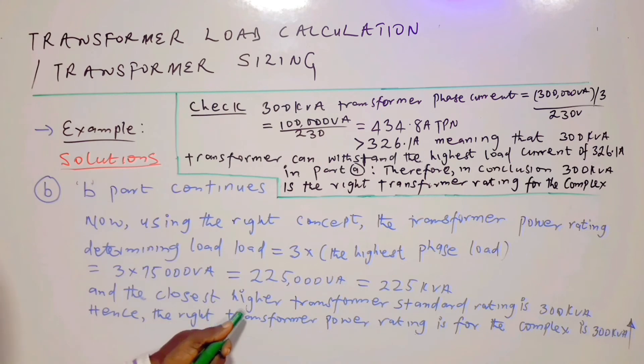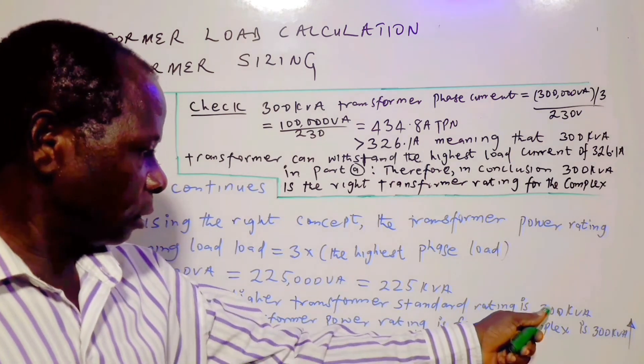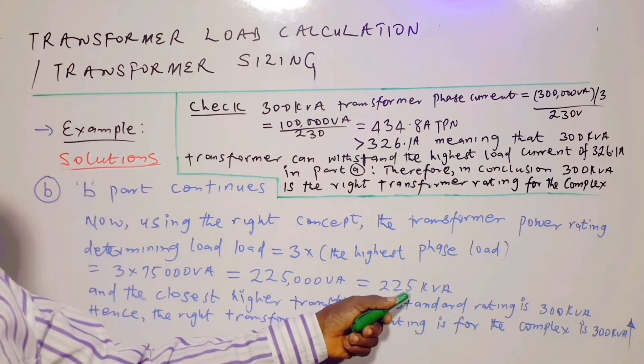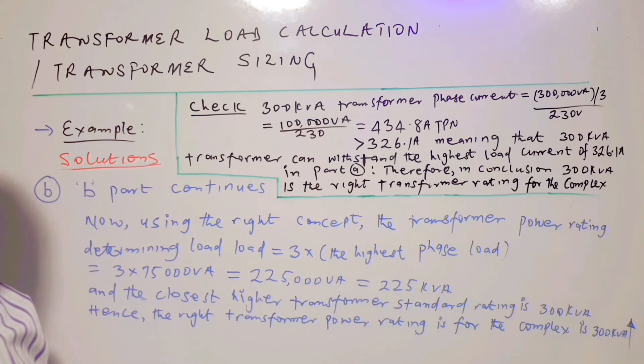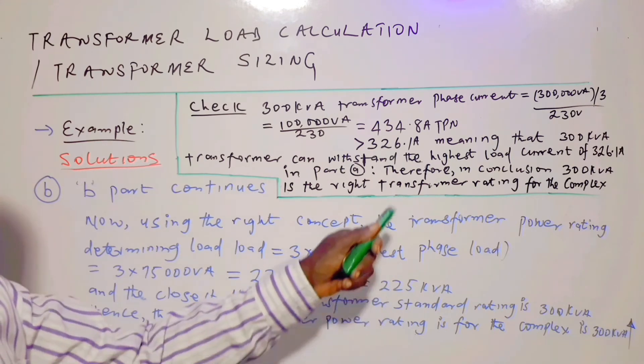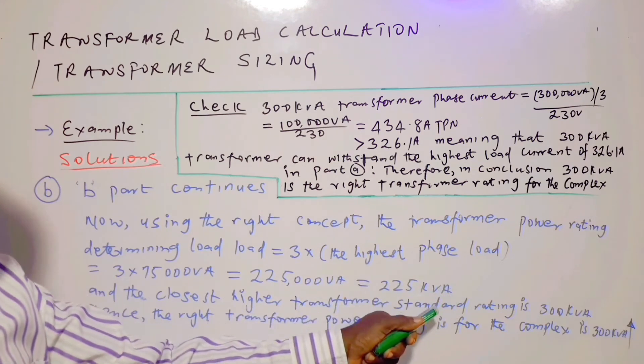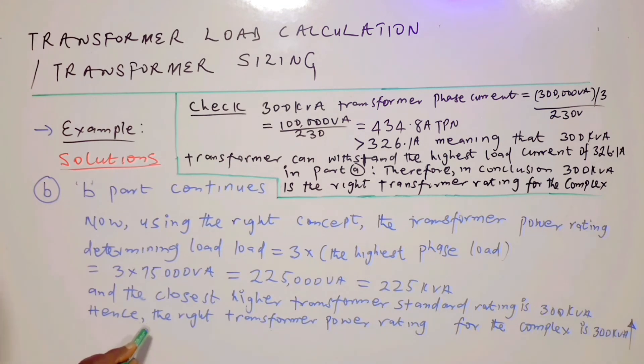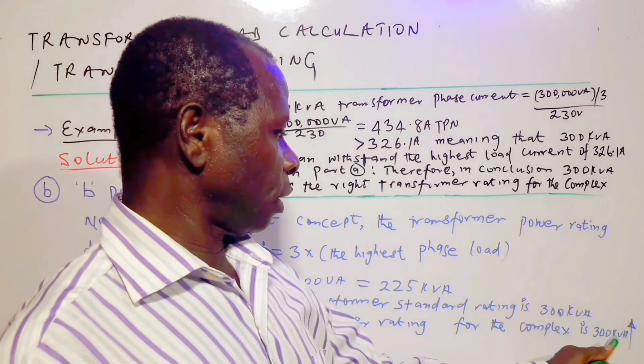And the closest IEC transformer standard rating is 300 kVA. Because when we look at 225 kVA, one doesn't go lower than this. One will look for the next higher transformer rating, and that is 300 kVA. Hence the right transformer power rating for the complex is 300 kVA.